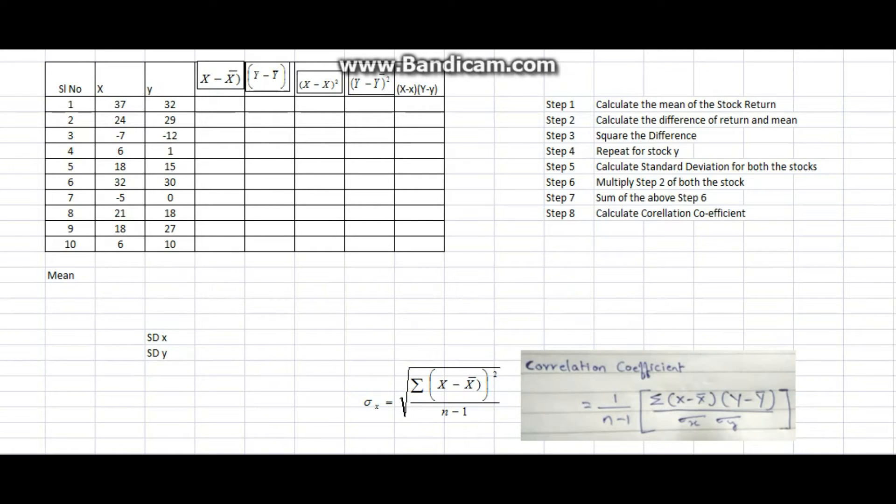First, you need to calculate the sum of all the returns. This, when divided by the number of observations which is 10, gives you the mean. Similarly, I total them up, divide by the number of observations which is 10, and I get mean for X and Y. By coincidence, both are coming as 15.